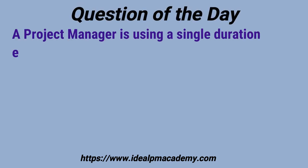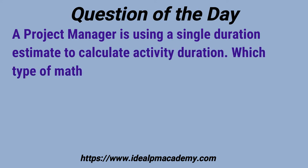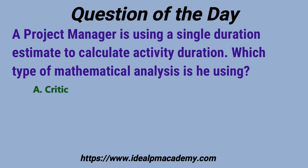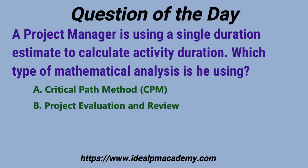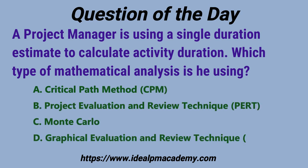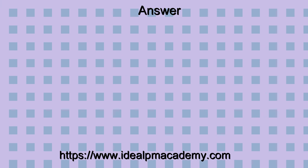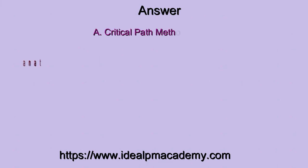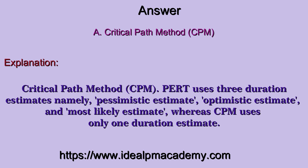A project manager is using a single duration estimate to calculate activity duration. Which type of mathematical analysis is he using? The options are: A) Critical Path Method, B) Project Evaluation and Review Technique, C) Monte Carlo, D) Graphical Evaluation and Review Technique. The correct answer is option A, Critical Path Method.